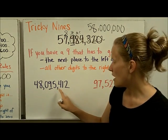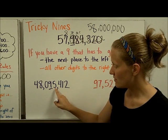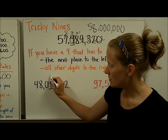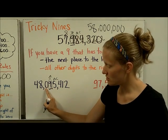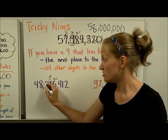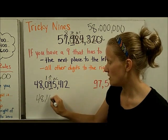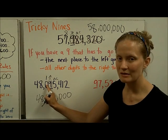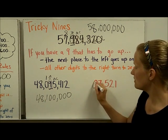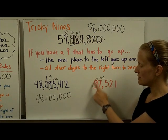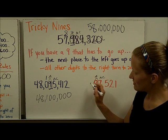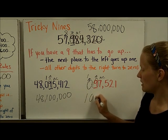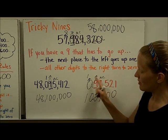Let's do two more examples with tricky 9s. I'm rounding to the 10,000th place, and this 5 tells the 9 — here's the rocket, mission control — tells the 9 to go up. Well, it can't go up to a 10, so it tells the next digit to go up. Going up from 0 is just 1, so this one's going to turn out to be 48,100,000. Here's another example in the 10,000th place. This 7 tells the 9 to blast off, and it's going to tell the next digit — which is really an invisible zero — to turn to a 1, so we're going to get 100,000 when this 9 bumps up.